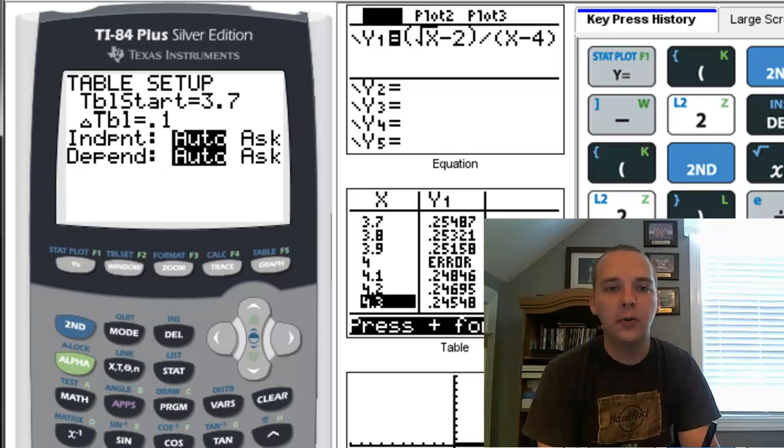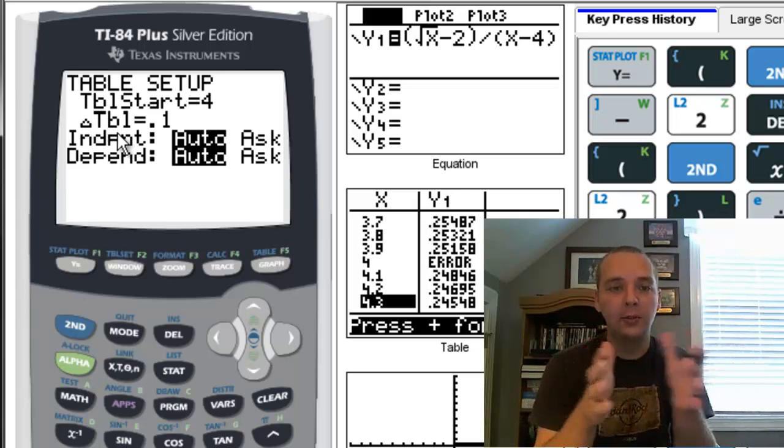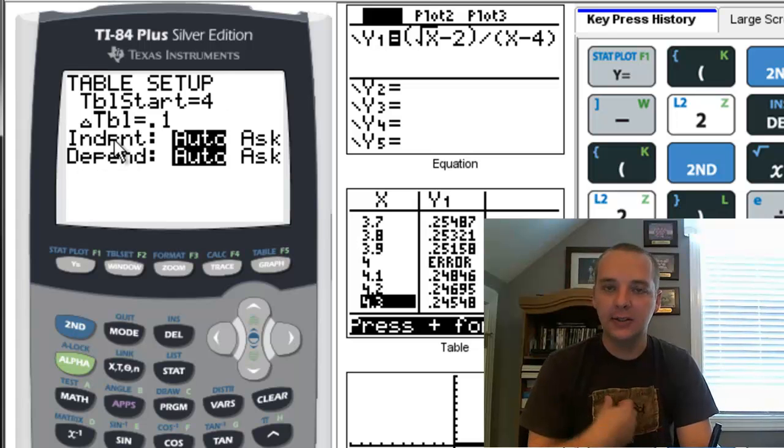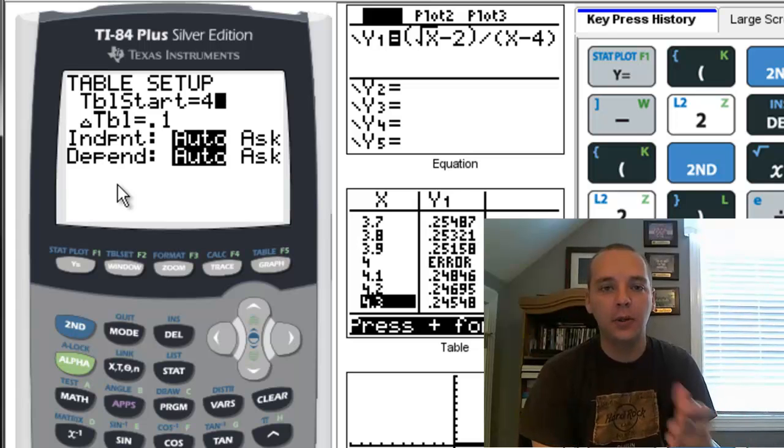So we'll start this value at 4, and if you want it to automatically generate the table, you can set this delta table—that in essence is the table width, that's what delta means, the change in—to be 0.1. If we automatically let it generate the x values because x is the independent variable and y is the dependent variable, because y depends on x, then it will automatically spit out the x and y values for the whole function.